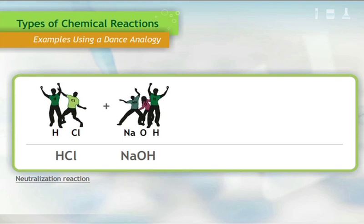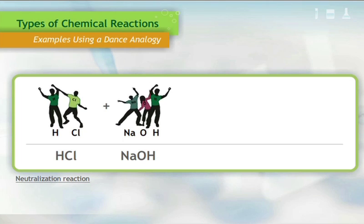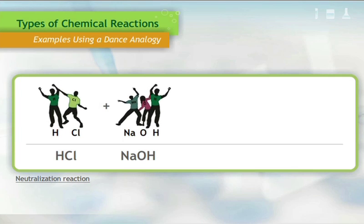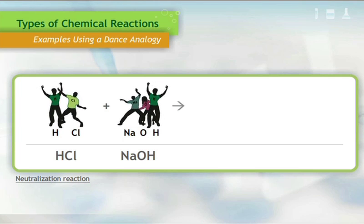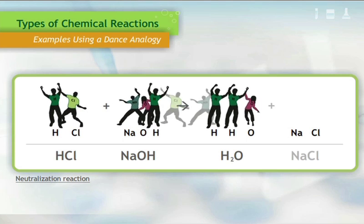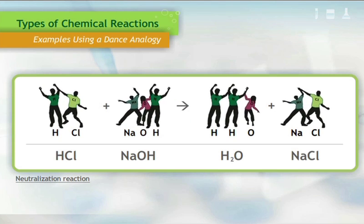A neutralization reaction is a special type of double displacement reaction. For example, hydrochloric acid, HCl, is added to sodium hydroxide, NaOH. The resulting products are water, H2O, and sodium chloride, NaCl, which is a salt compound.